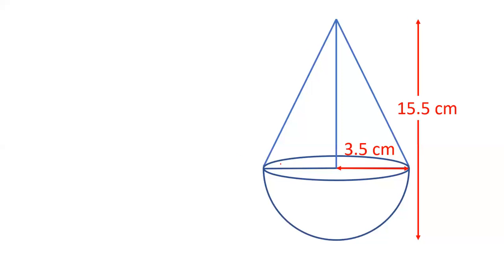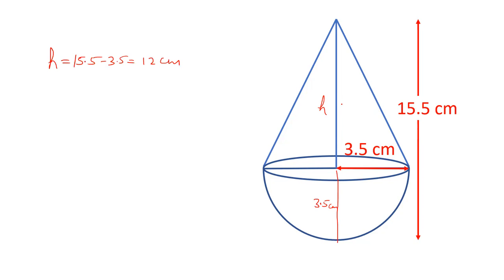First, with the given data we can find out directly the volume of the cone and volume of the solid. Friends, the radius of the hemisphere is same as the height of the hemisphere, so this is also 3.5 cm. The total height is 15.5, so the height of the cone is 15.5 minus 3.5, that is 12 cm. So this height is 12 cm. If we have to calculate the volume, then we can calculate directly.